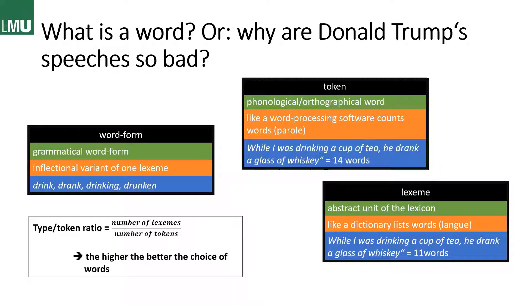And that brings us to the type-token ratio, which you calculate by dividing the number of lexemes, or types, by the number of tokens. And obviously, the higher the number gets, the better the word choice is, because you have more different words. Donald Trump's speeches have a very low type-token ratio most of the time — there are studies on that.